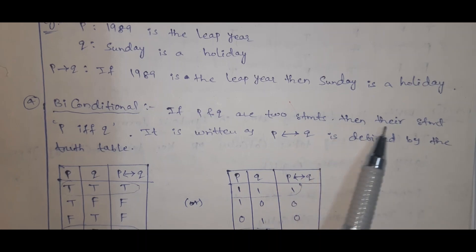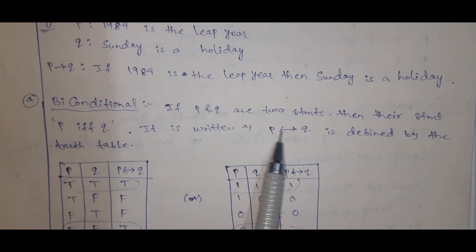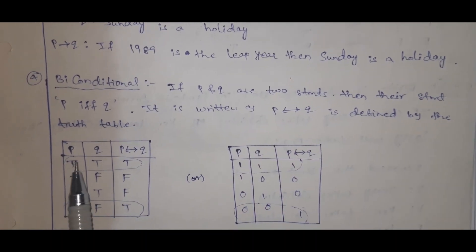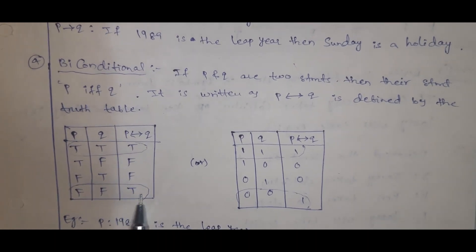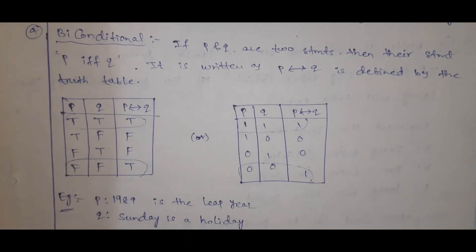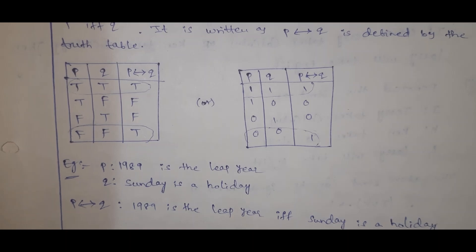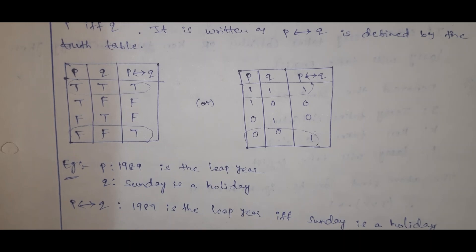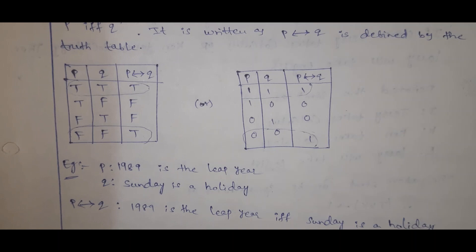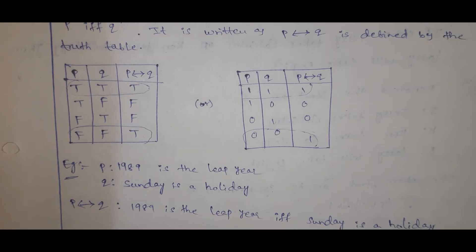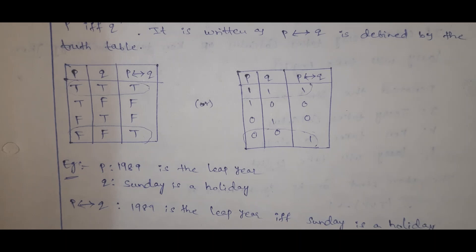Biconditional: if P and Q are two statements, then the biconditional is P if and only if Q (P↔Q). It is defined by the truth table — true when both sides are true or both are false; the remaining combinations are false.